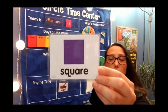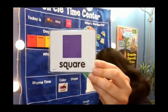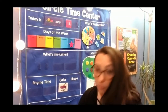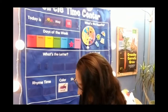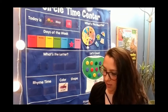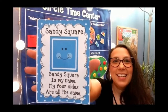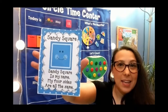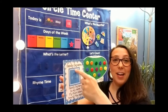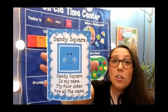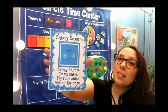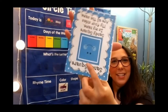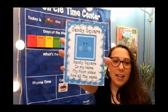Our shape today is the square. Look at that — the square is purple! Oh, I found that purple flower — it was hiding in our shape friends. Let's meet our square friend today — I apologize for not being prepared. Sandy Square. Sandy Square is my name, my four sides are all the same. A square has four sides, a square has four sides, all those sides are the same length. If I turn the square like this, it looks the same. If I turn the square like this, it looks the same. Because all the sides are the same.